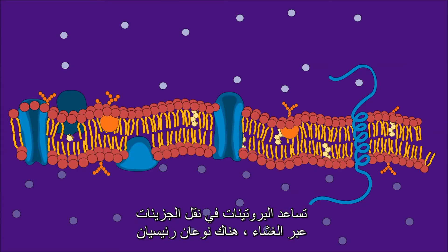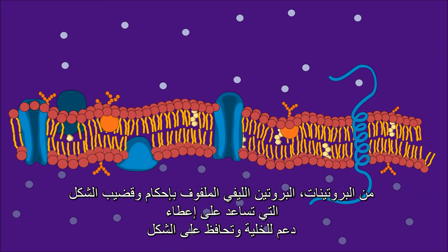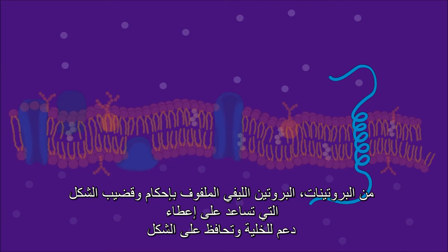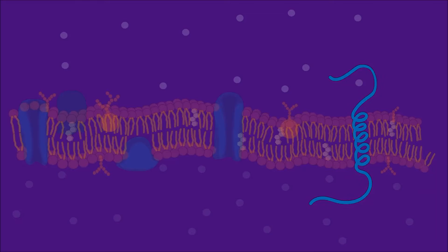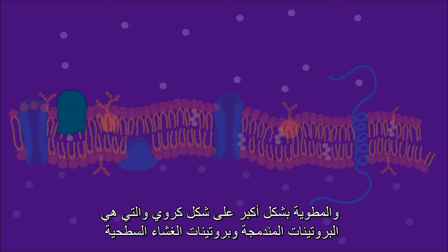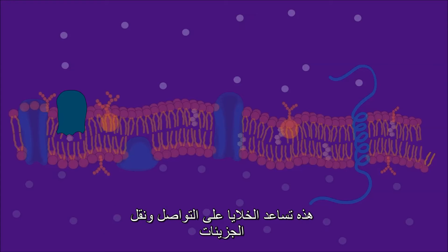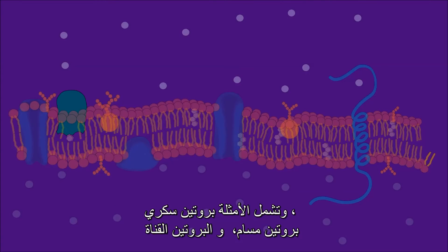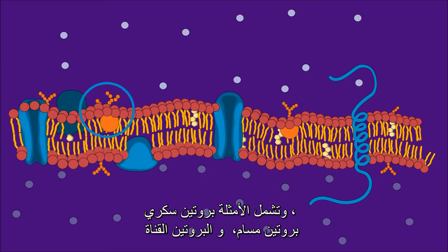There are two major types of proteins. Tightly coiled, rod-shaped fibrous proteins, which help give the cell support and shape, and the more compact, globular-shaped integral proteins and peripheral proteins. These help cells communicate and transport molecules. Examples include glycoprotein, pore protein, and channel protein.